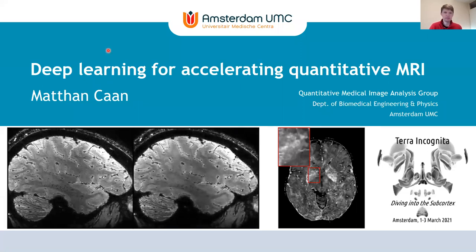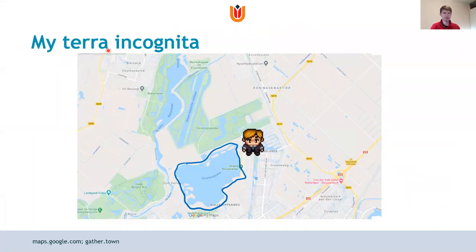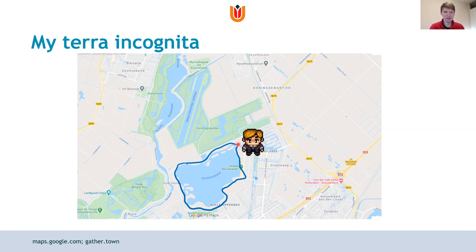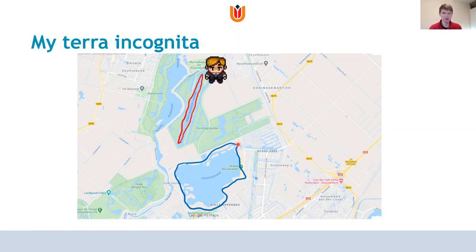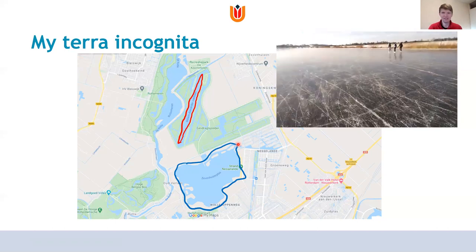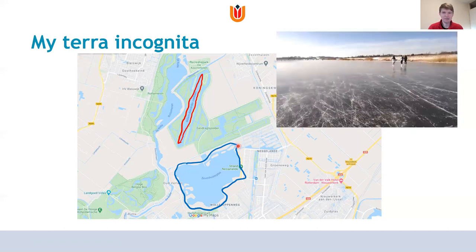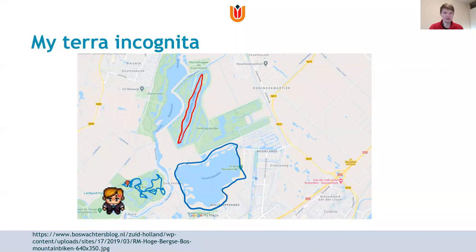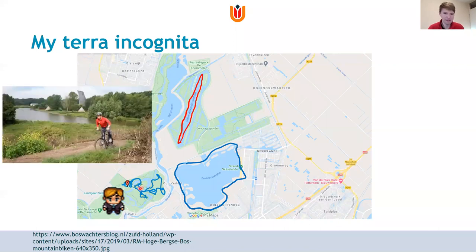Before diving deep I thought of taking an informal detour and introducing my backyard that I explored a bit in the last year — my terra incognita — where I started by taking small tours around a small lake in the neighborhood, but over time found out there's much more to explore than just this single route. For instance, on this rowing course in the past weeks of winter we've been able to do some ice skating.